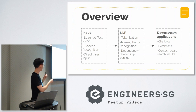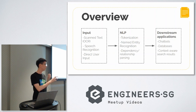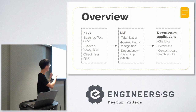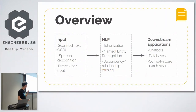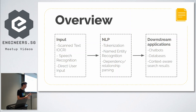There are a few forms the text could come in. You could have optical character recognition, which is scanning the text. You could have speech recognition, which we are about to demo soon. You could also have direct user input, like in a chatbot where the user types it in.